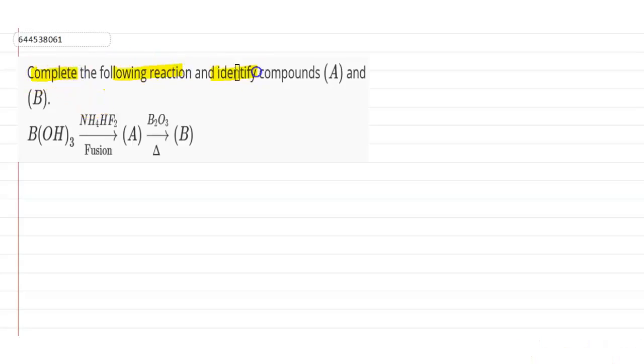the following reaction and identify compounds A and B. This is the reaction of boric acid with NH4HF2. We are doing fusion here, then A is formed, and A is reacting with B2O3 giving us B. So first of all, write the